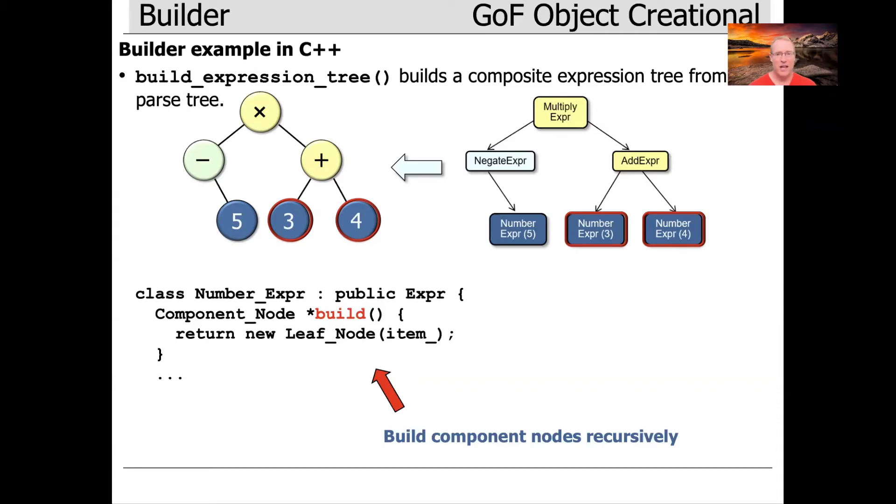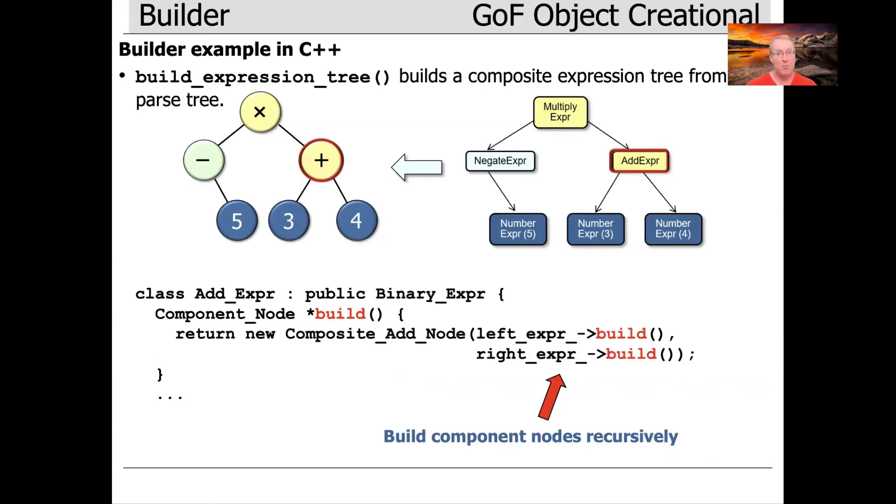And in this case, that build method goes ahead and makes a leaf node with the item passed in, the item being the value that's part of that number expert. So you can see that's the base case of the recursion, and then it'll pop back out, giving the left and right expert results,